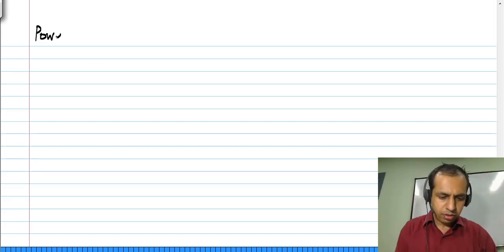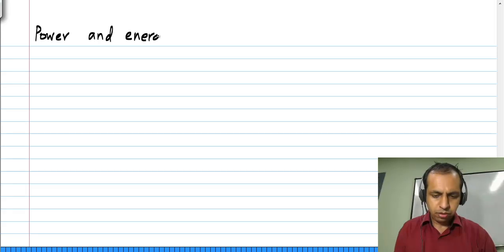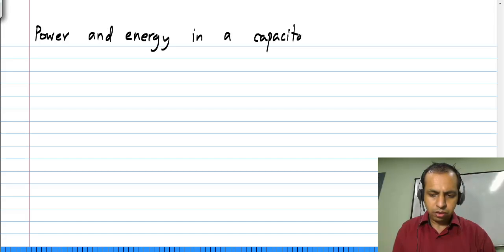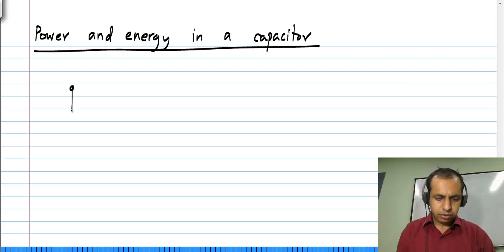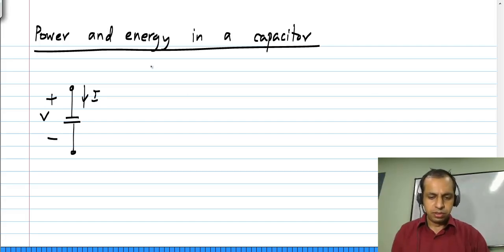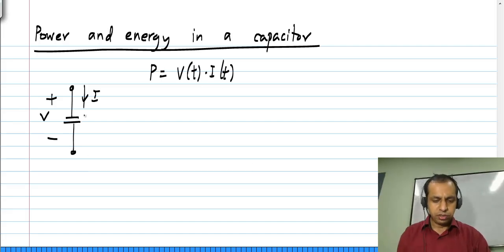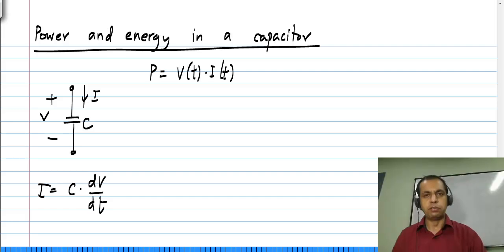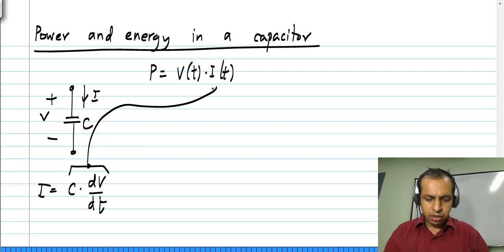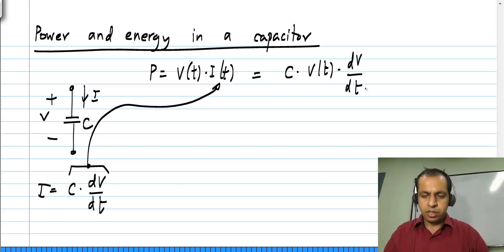We will consider the power and energy in a capacitor. As usual, we take the voltage and current with the appropriate passive sign convention. The power, just like for any two-terminal element, is the product of voltage and current. The characteristic of a capacitor is that it enforces the relationship I equals C times the time derivative of voltage. Substituting this current gives us P equals C times V(t) times dV/dt.